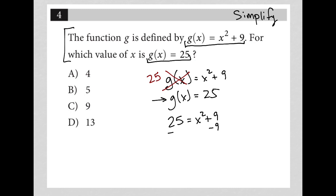I could then reduce this or simplify this further, I should say, in which case I'd have 16 equals x squared, then I can square root both sides, and I'd have plus or minus 4 is equal to x.